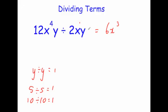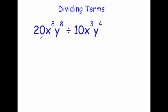When y divided by y equals 1 we tend not to write that, so we say they cancel out — it has no effect on the answer. Next: 20x to the power of 8, y to the power of 8, divided by 10x cubed, y to the power of 4. Numbers: 20 divided by 10 is 2. For x: 8 subtract 3 is 5, so x to the power of 5. For y: 8 take away 4 is 4, so y to the power of 4. The answer is 2x to the power of 5, y to the power of 4.